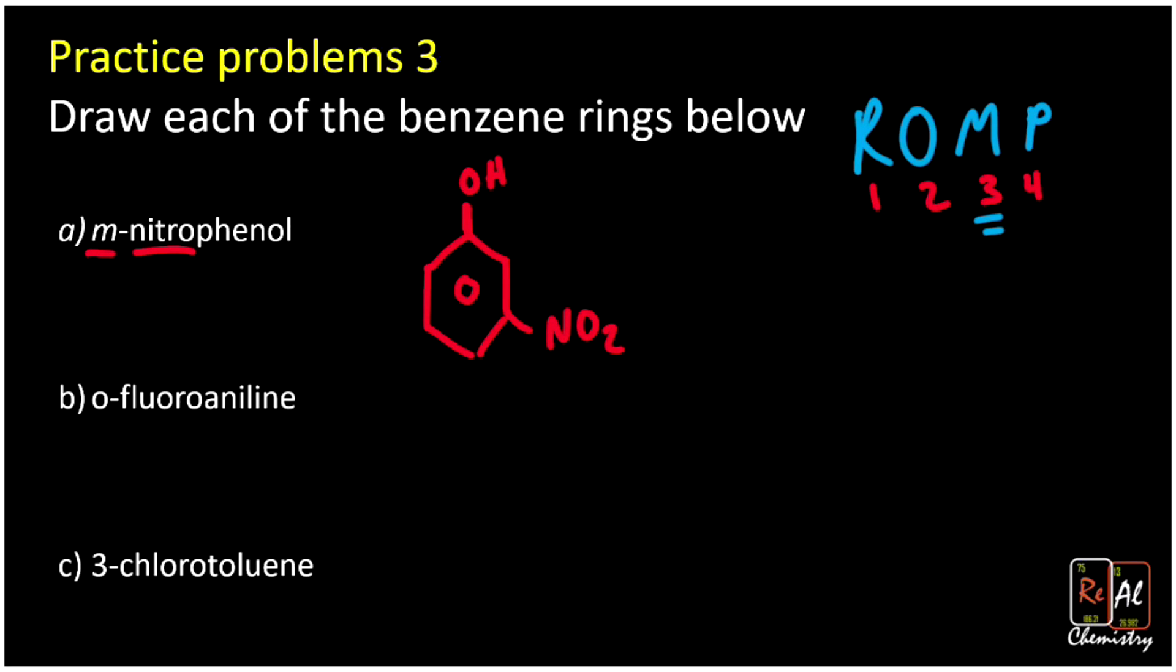Okay, then we have ortho-fluoroaniline. Ortho-fluoroaniline - so ortho means we got something at the one and two position. Aniline means we have an NH2 up top, so put our little ring, we got NH2, and then ortho means at the second position we have a fluorine, that's right there.